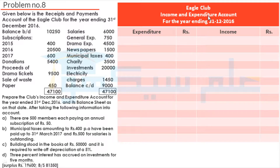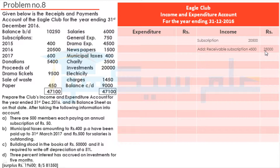First of all, we will prepare the Eagle Club Income and Expenditure Account. We will record the income. Our subscription for 2016: we will add the subscription of Rs. 20,500, plus receivable Rs. 4,500, giving total subscription Rs. 25,000. After that, we record proceeds of drama tickets Rs. 9,500, and sale of wastepaper Rs. 450.